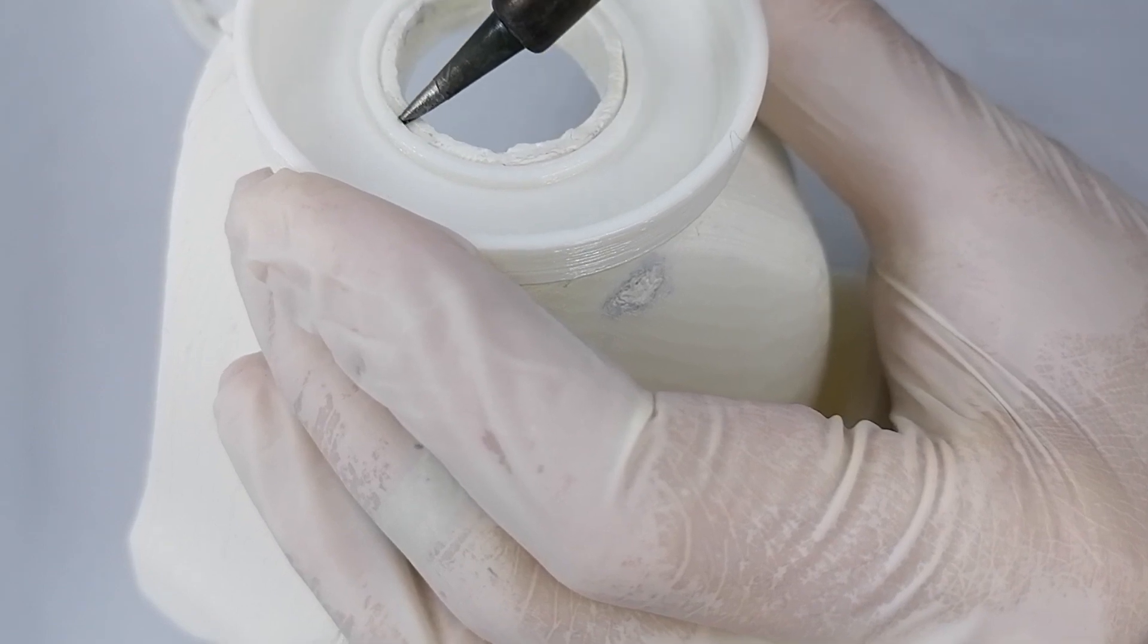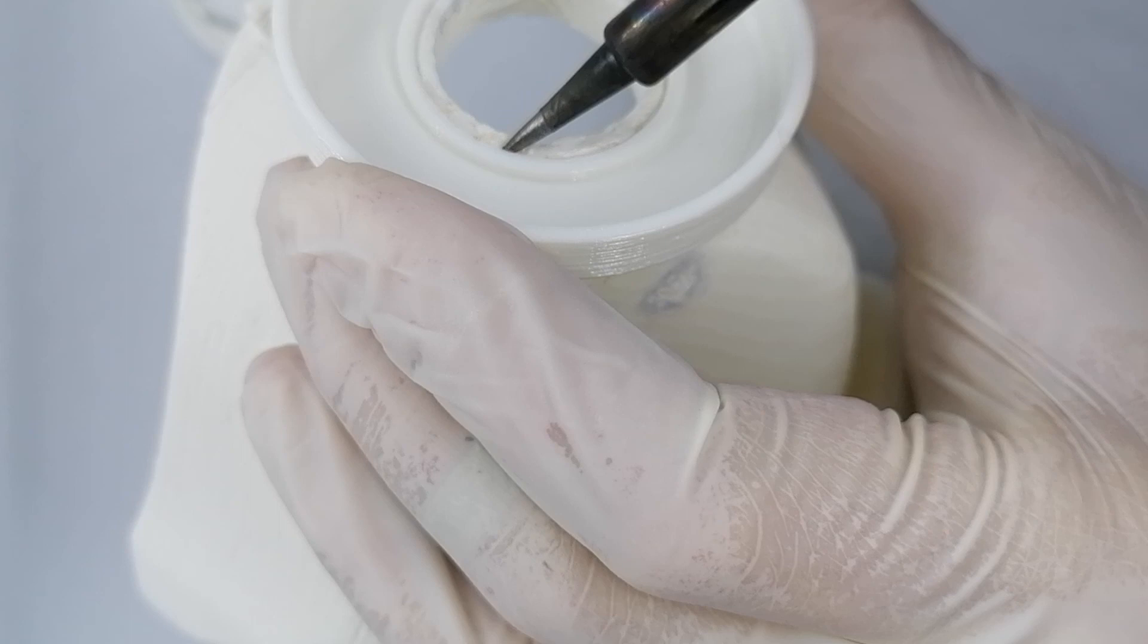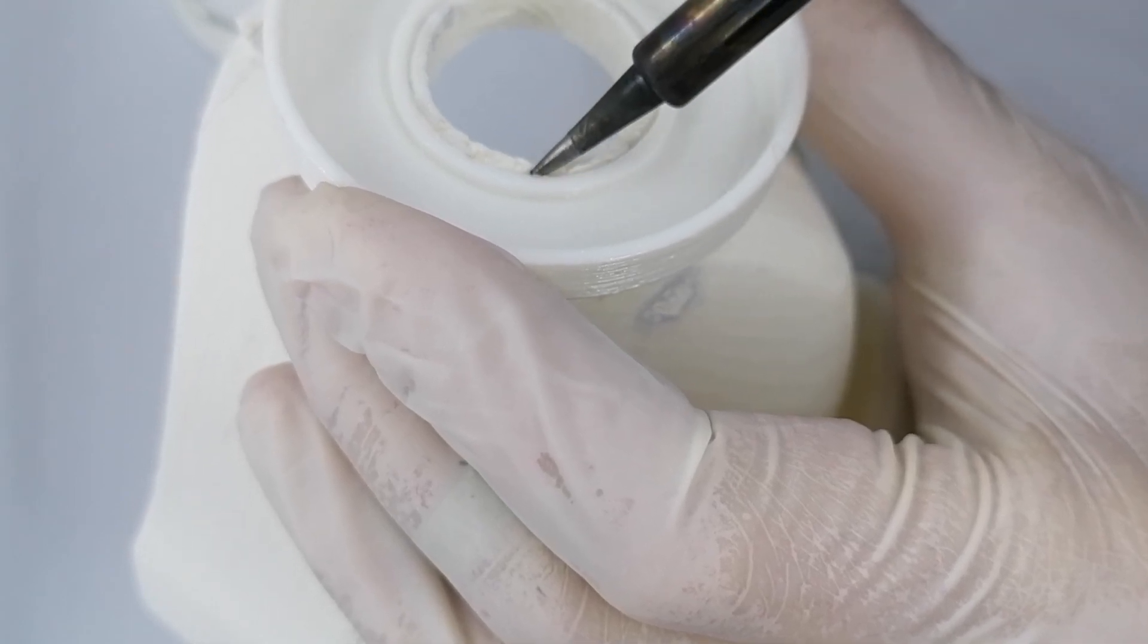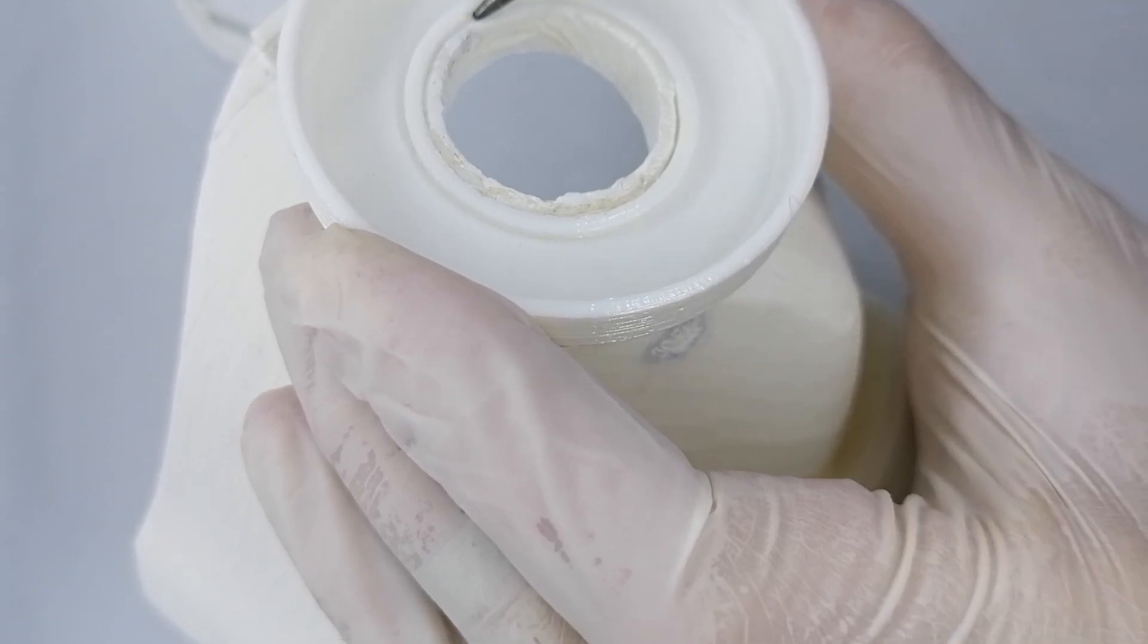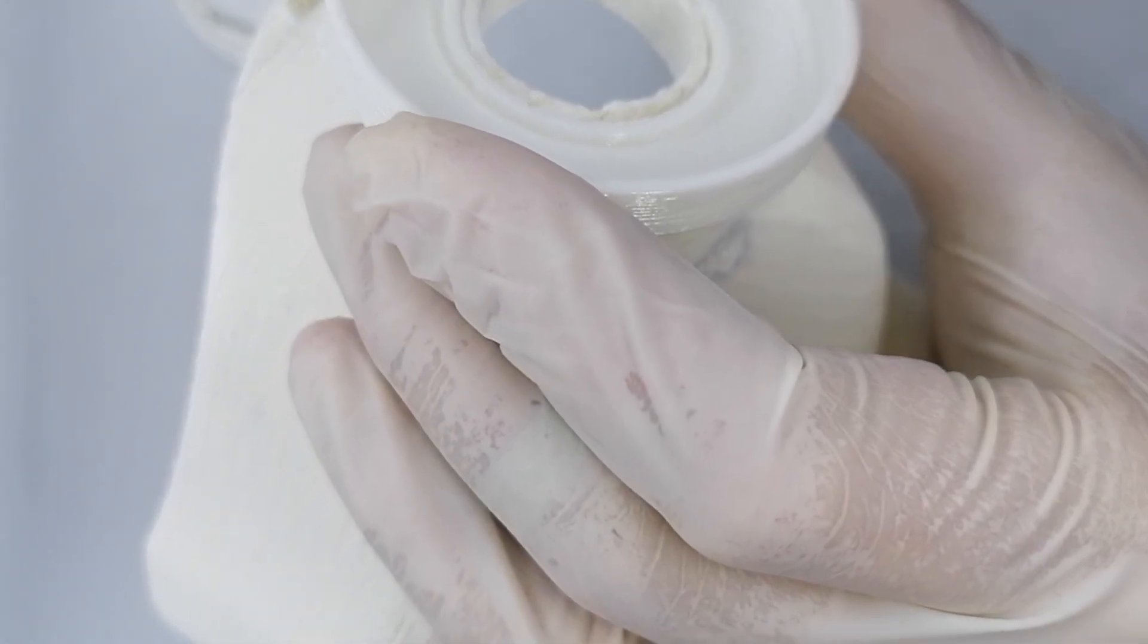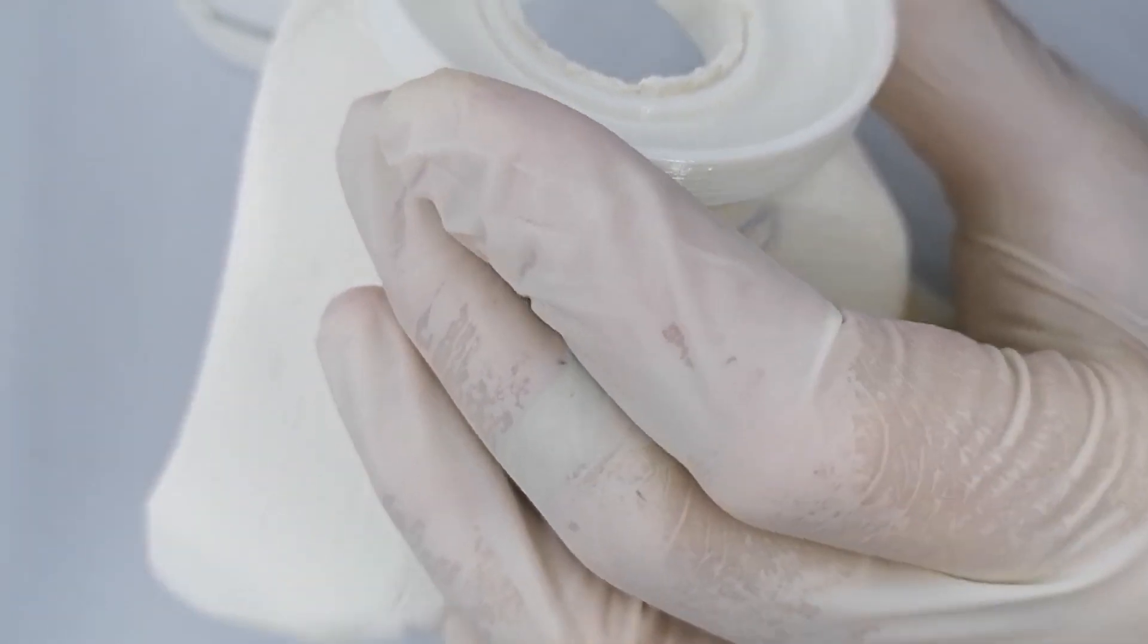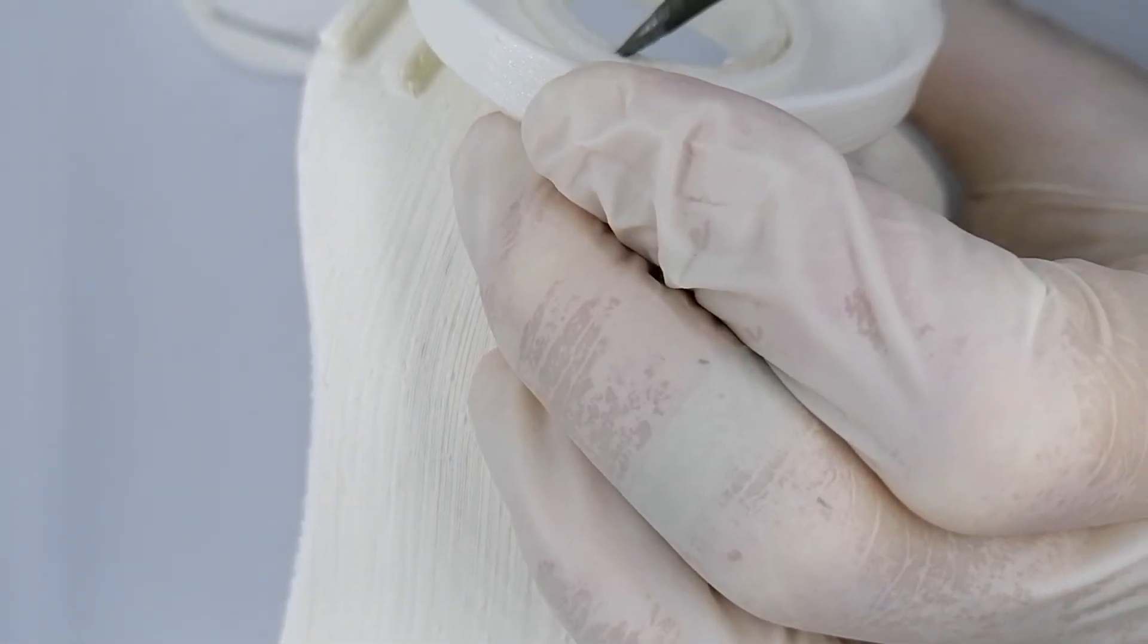I just set my soldering iron on 300 degrees because this plastic is PLA. And melting it a little will just join the two parts enough so the filter won't fall off.